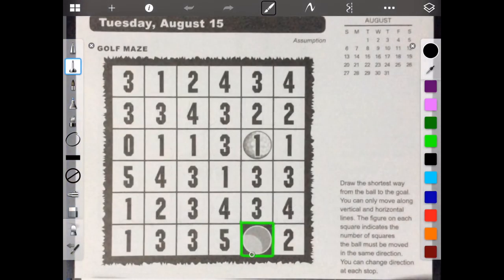Hello. Welcome to Brain Games Calendar 2017. We're in week 33, day two. We have golf maze. Let's begin. Draw the shortest way from the ball to the goal. You can only move along vertical and horizontal lines. The figure on each square indicates the number of squares the ball must be moved in the same direction. You can change direction at each stop.